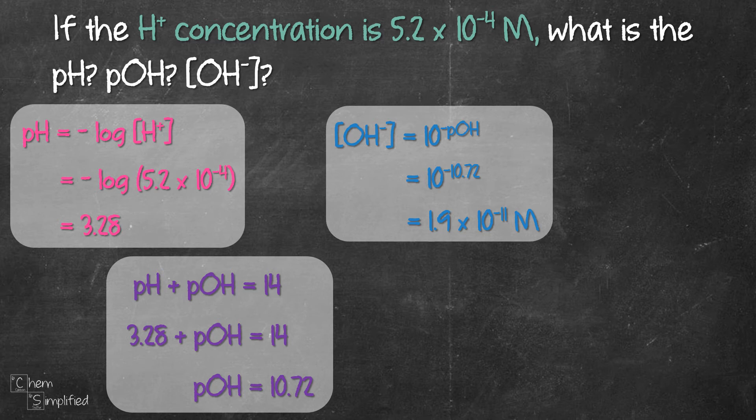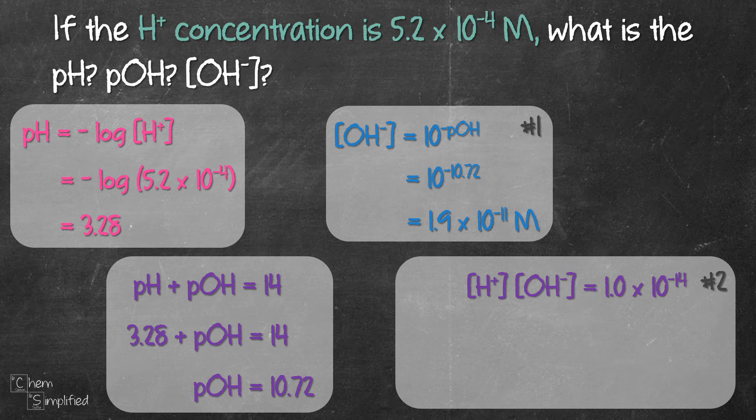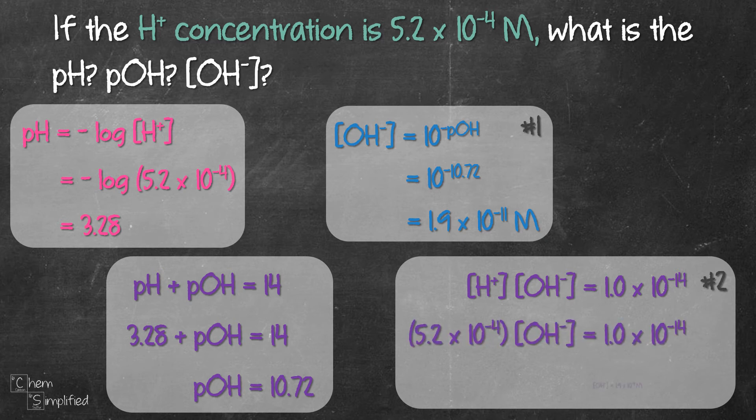Now this is one way to find the concentration of OH- from pOH. Another way is from concentration of H+, directly using this relationship equation. We plug in the given H+ concentration, divide the numbers, and that gives us 1.9 times 10 to the negative 11 molar. It's the same value as the one we found using the first method. In fact, it should be because we are calculating the same concentration of hydroxide ion.